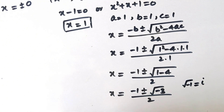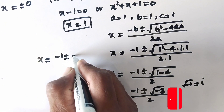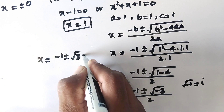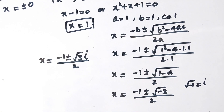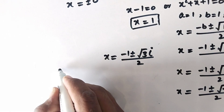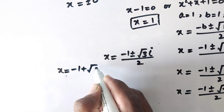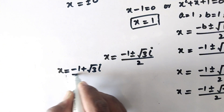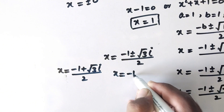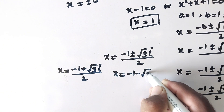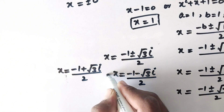So here we can write x is equal to minus 1 plus or minus square root of 3 times i over 2. That can be written as x equal to minus 1 plus square root of 3 times i over 2, and x equal to minus 1 minus square root of 3 times i over 2.